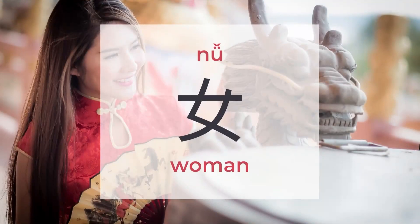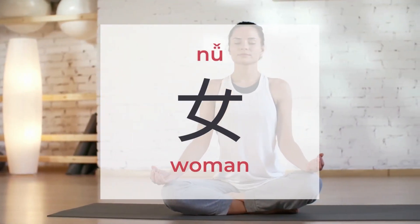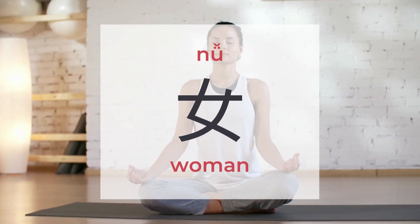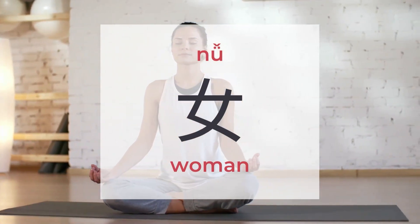女 means woman or female. There are around 681 characters to be found under 女. 女 is a pictogram with only one form. 女 mainly shows on the left and can also be on the bottom.